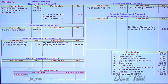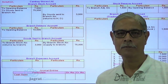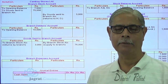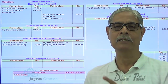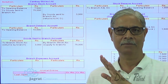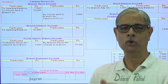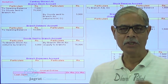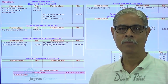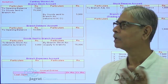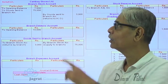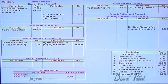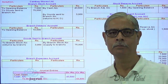For cash sales: goods are sold by the branch for cash, cash is remitted to the head office. When goods are sold, branch stock declines. Since goods are sent and branch stock is prepared at invoice price, the entry for cash sales is: cash account debit to branch stock account credit. Stock account is credited for cash sales.